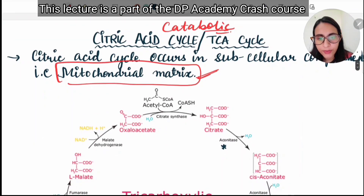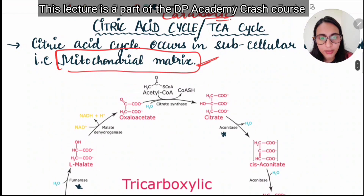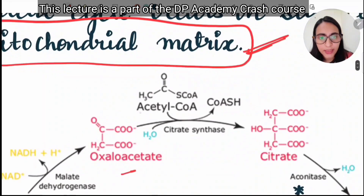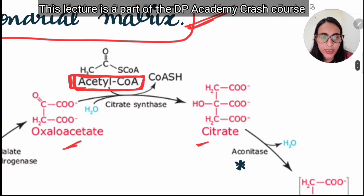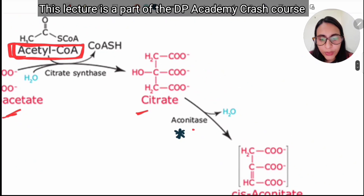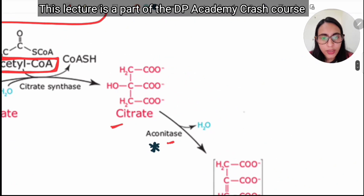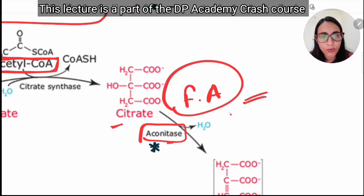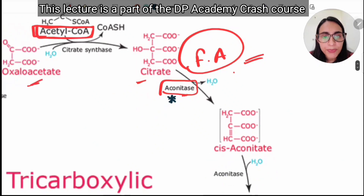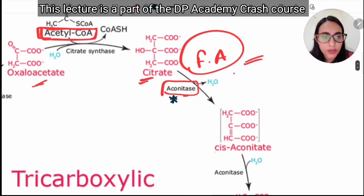In the TCA cycle, acetyl-CoA — the product of the link reaction — combines with oxaloacetate to form citrate. Citrate is then converted to cis-aconitate in the presence of the aconitase enzyme. An important exam point: fluoroacetate inhibits aconitase.